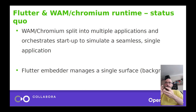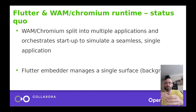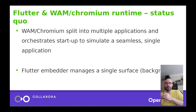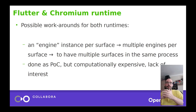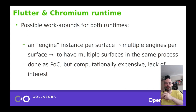How are things currently running? Chromium and WAM basically split the panel and the background into two different processes and orchestrate the startup — they need to be started in a certain way to correctly implement the AGL shell client protocol. For a while the Flutter embedder just managed a single surface, which is the background surface. A possible workaround for both runtimes is to have an engine instance per surface — multiple engines per surface, basically — and have three distinct drawing loops, each for a surface.